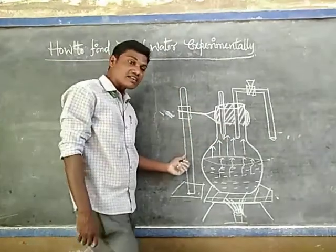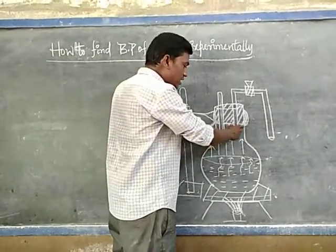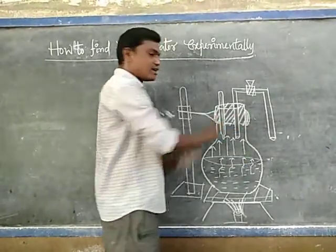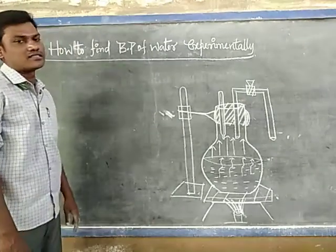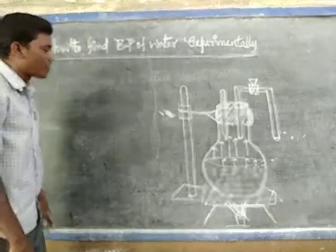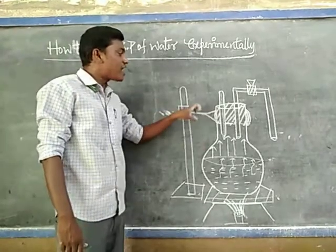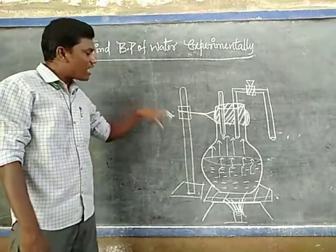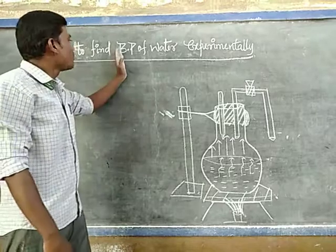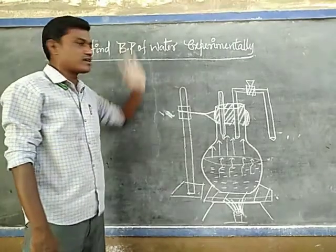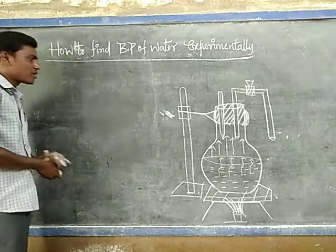What is the use of the retort stand? With the help of the retort stand, we can keep the round-bottom flask freely on the wire gauze. These are the materials required to conduct this experiment — the boiling point of water experiment, to find the boiling point of water.